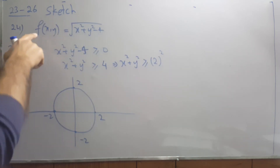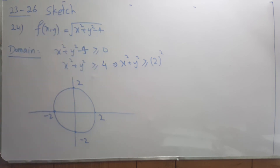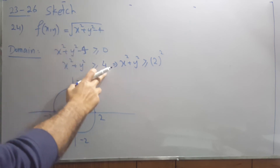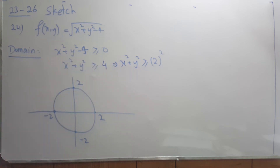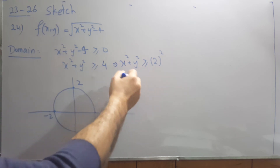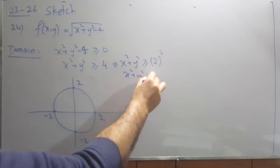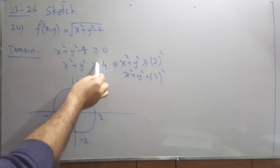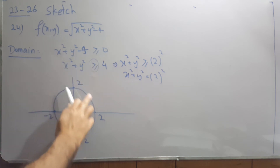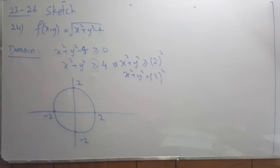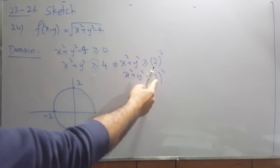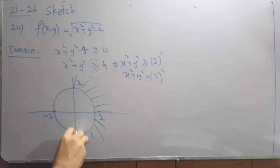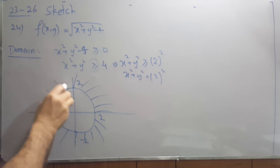For the function with square root of (x² + y² − 4), the domain requires everything inside the square root to be zero or positive. Taking 4 to the other side gives x² + y² ≥ 4, and 4 is the square of 2, so this is a circle of radius 2. Because it is not a strict inequality — there is an equals sign — you draw the circle as a solid (dark) line. All points on or outside the circle are in the domain.